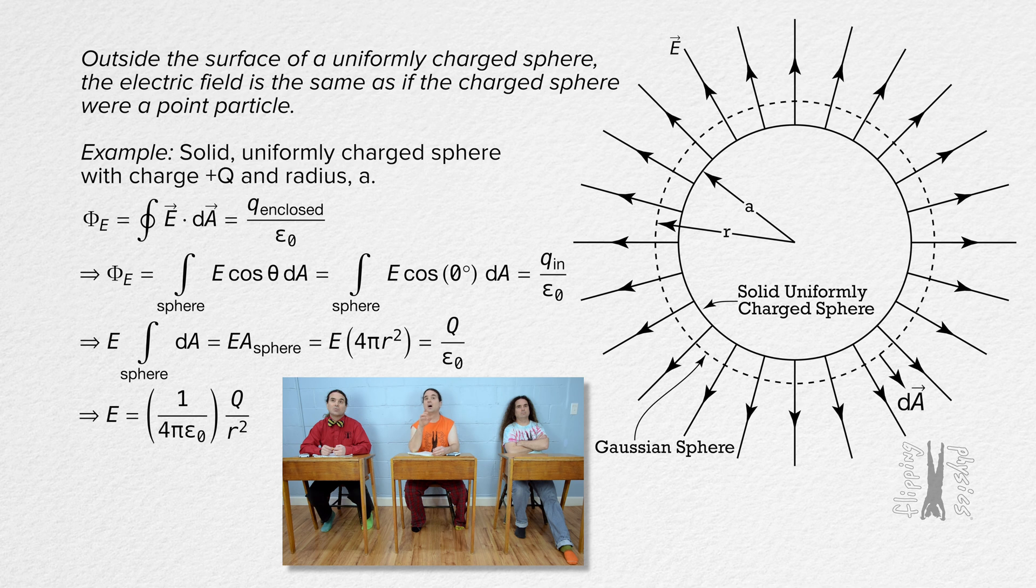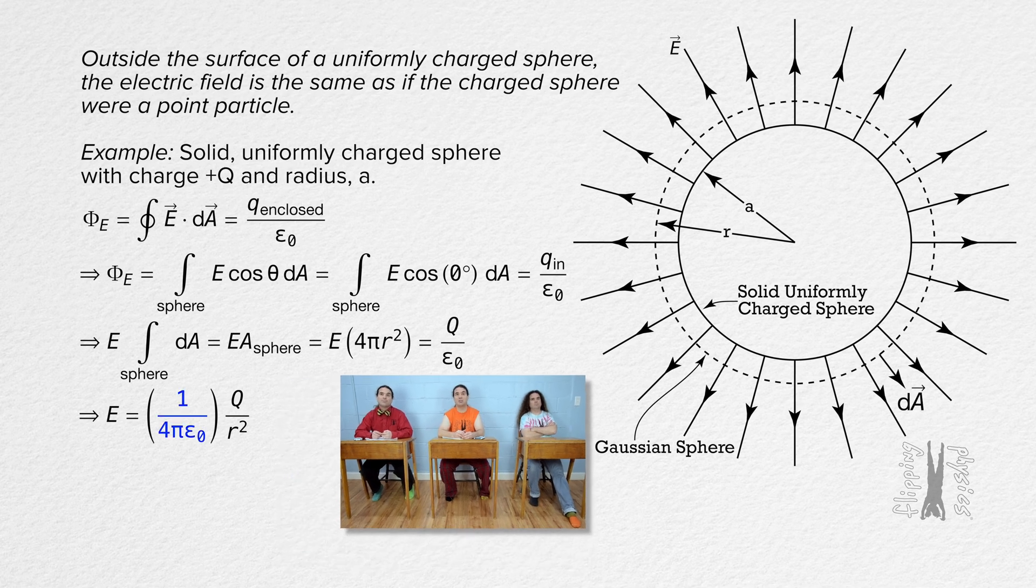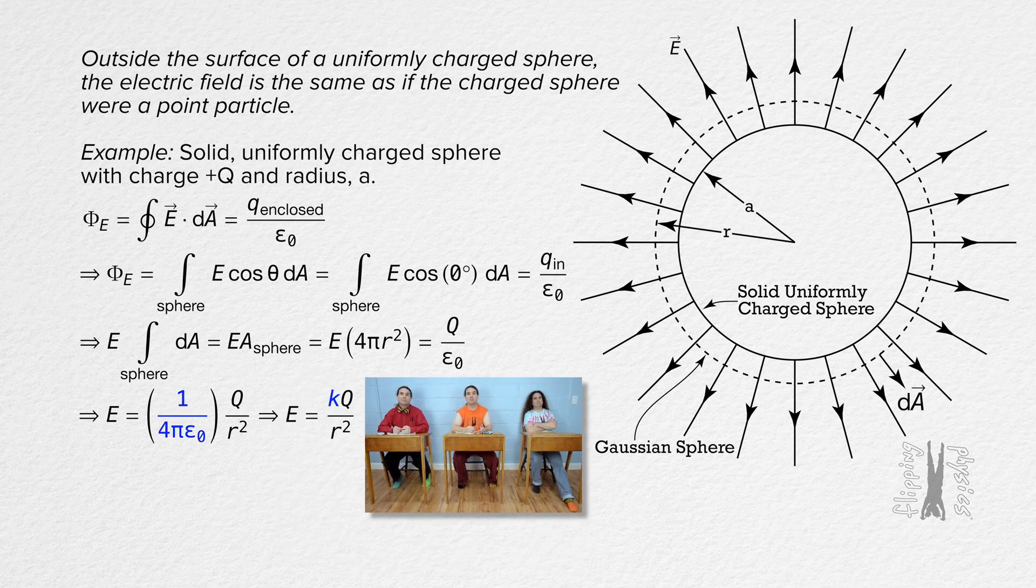Oh, but we can replace the parenthetical variables with the Coulomb constant because the Coulomb constant equals the inverse of 4 pi times the permittivity of free space.